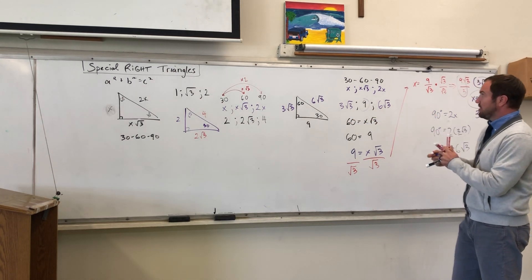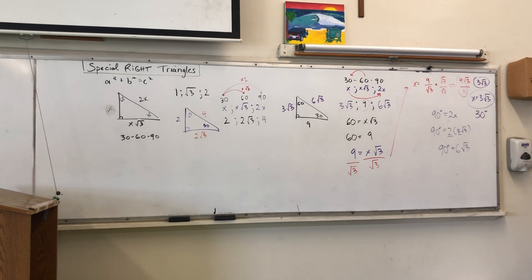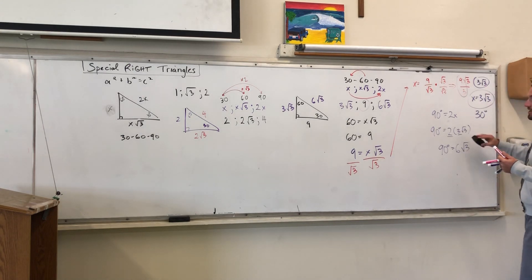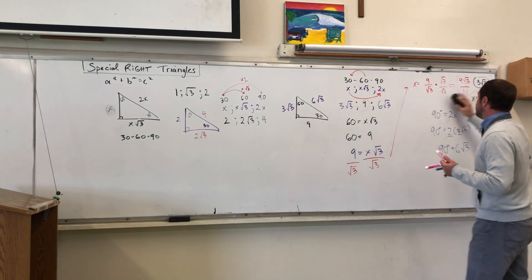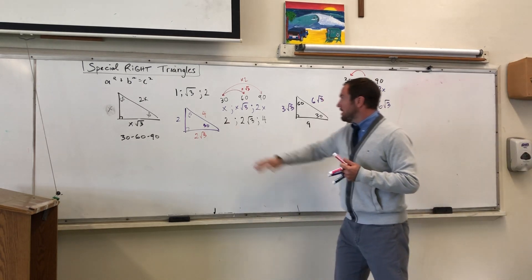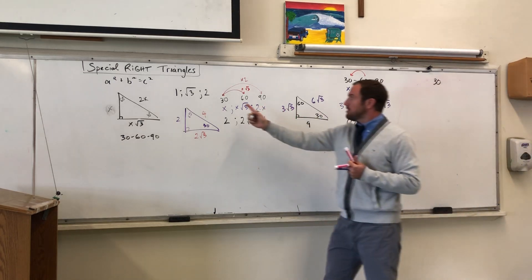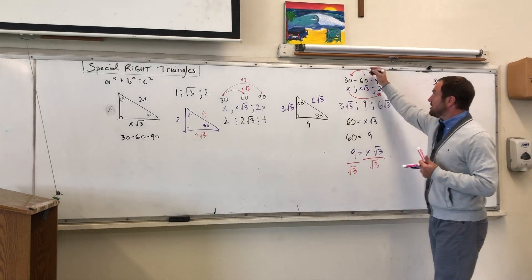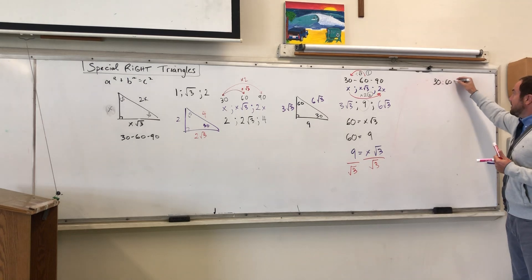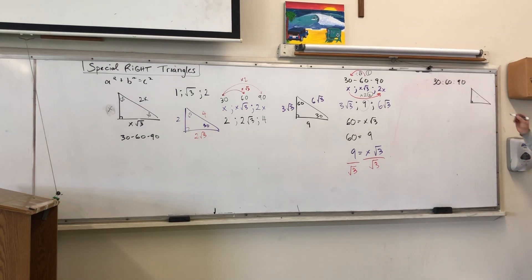This is tougher because you go from 60 to 30, then from 30 to 90. I'll give you a little chart: if they give you a 60, divide by √3, then multiply by 2. Let's look at one more example — a 30-60-90 where they give us the side opposite 90. When you get a 30, multiply by √3 and by 2. When you get a 60, divide by √3 (step 1), then multiply by 2 (step 2). Let's say opposite 90 is 10.